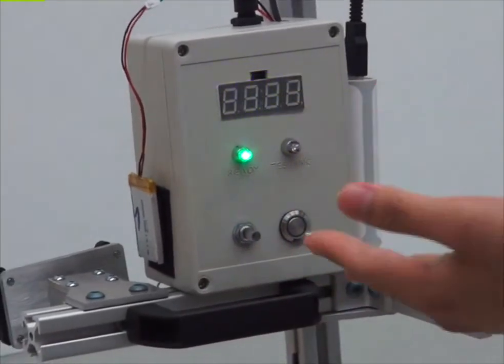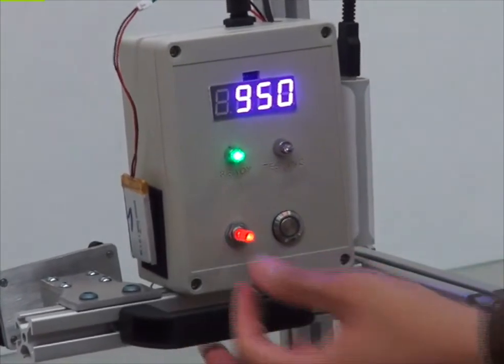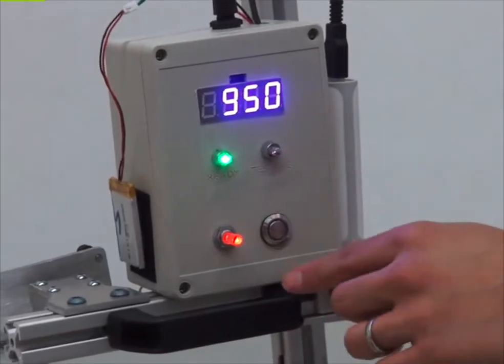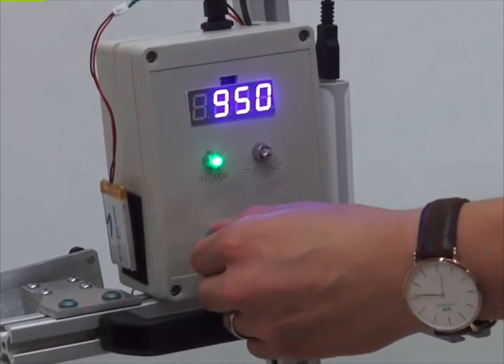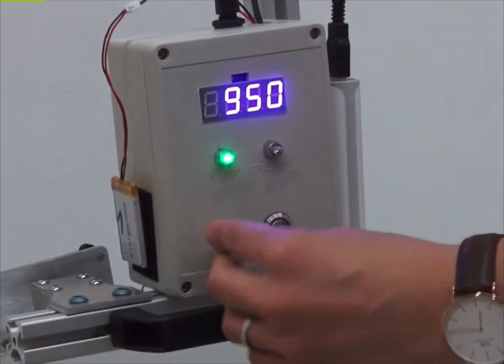Now if we are happy with the number we can press the knob here. Now it turns red. In this stage, if we want to accept the height, we should rotate it clockwise until it turns green and press it like this.